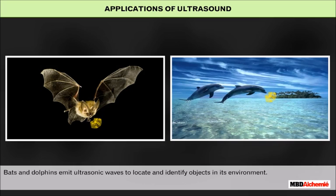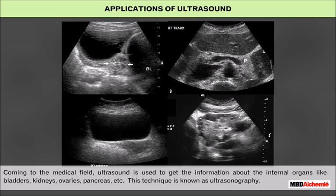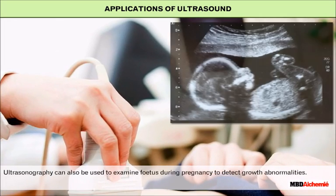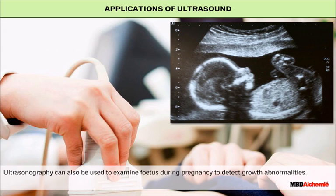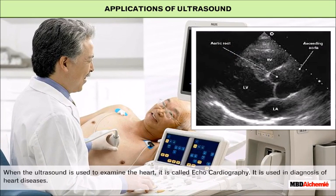Bats and dolphins emit ultrasonic waves to locate and identify objects in their environment. In the medical field, ultrasound is used to get information about internal organs like bladders, kidneys, ovaries, pancreas, etc. This technique is known as ultrasonography. Ultrasonography can also be used to examine a fetus during pregnancy to detect growth abnormalities. When ultrasound is used to examine the heart, it is called echocardiography, and it is used in the diagnosis of heart diseases.